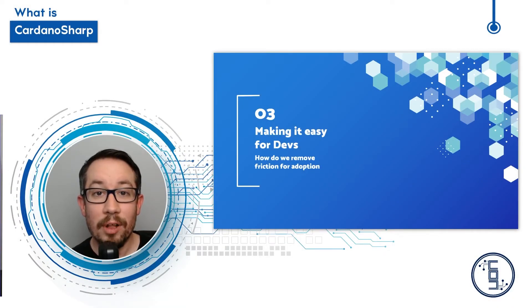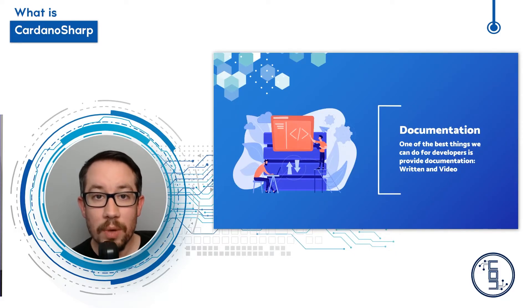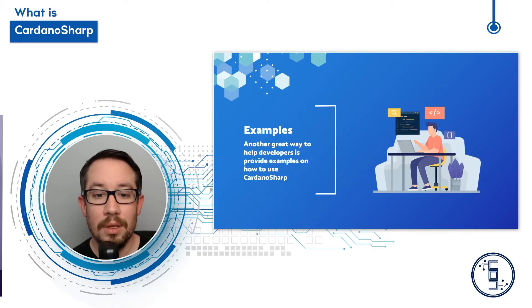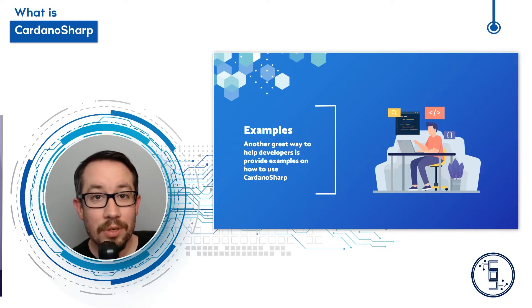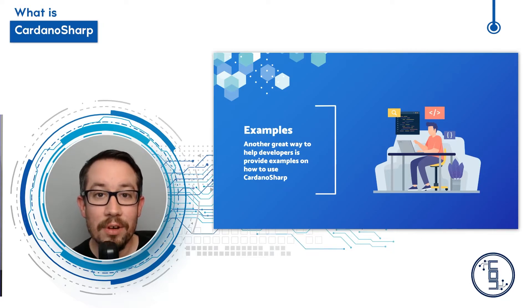Third, making it easy for developers. We need to remove the friction so we can get up and moving quickly. Documentation is one of the best ways we can do this — whether it's written or video, describing the various pieces and parts and how to use them is vital. Another great way is with examples. If we can demonstrate how to make a block explorer or how to make a light wallet, it's going to be a lot easier for a developer to use the library.